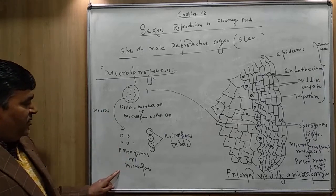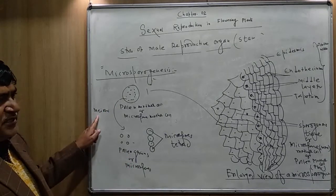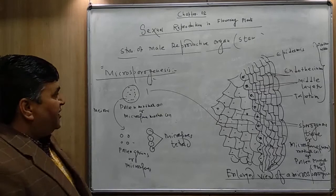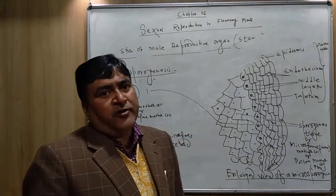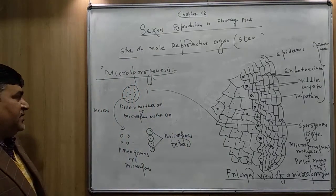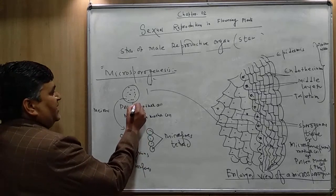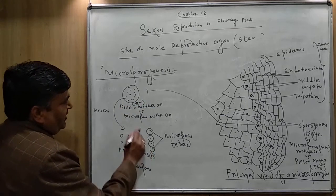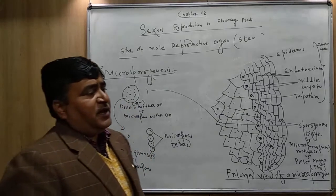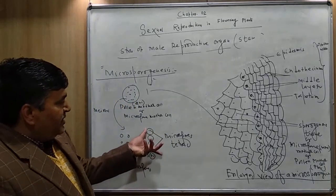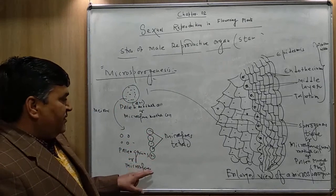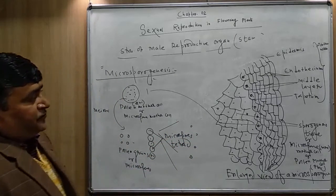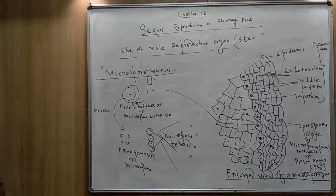Each pollen mother cell produces four pollen grains or four microspores by the process of meiosis. As meiosis is a type of cell division in which a diploid cell produces four haploid daughter cells, the pollen mother cell is diploid and all the pollen grains produced are haploid. When four pollen grains are produced they are initially attached to each other and are collectively called a microspore tetrad, but later on they become separated from each other.